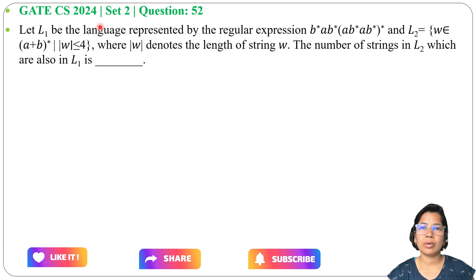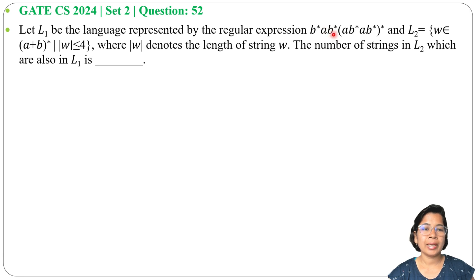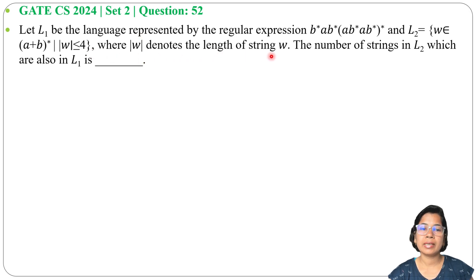Let's solve a previous question on regular language. This question was asked in GATE year 2024, Set 2, Question 52. Let L1 be the language represented by the regular expression B-Kleene-closure (AB-Kleene-closure), then bracket (AB-Kleene-closure AB-Kleene-closure) whole Kleene closure. And L2 equals W belonging to (A+B) whole Kleene closure, and the length of W is less than or equal to 4, where the cardinality of W denotes the length of the string.